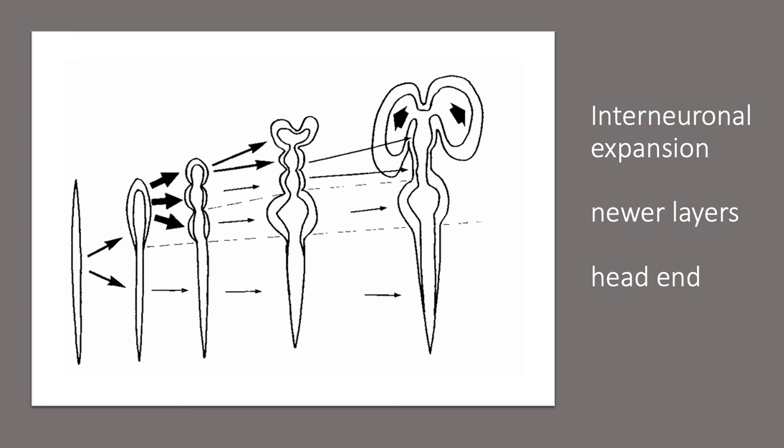Earlier organisms had very primitive nervous systems, meaning they had very few interneurons. Interneurons are entirely within the CNS and serve as integration points between afferent and efferent signals. Simple organisms have mostly afferent and efferent neurons with interneurons distributed throughout the body. During evolutionary development, the interneuron component expands and moves rostrally toward the head. New sophisticated layers of interneurons are added on top of older layers, resulting in what we call the brain — a mass collection of interneurons located at the rostral end of the organism.